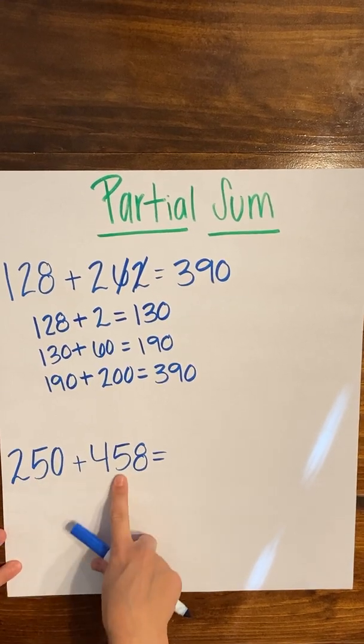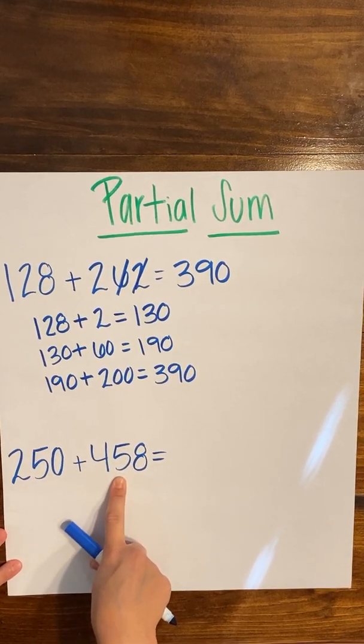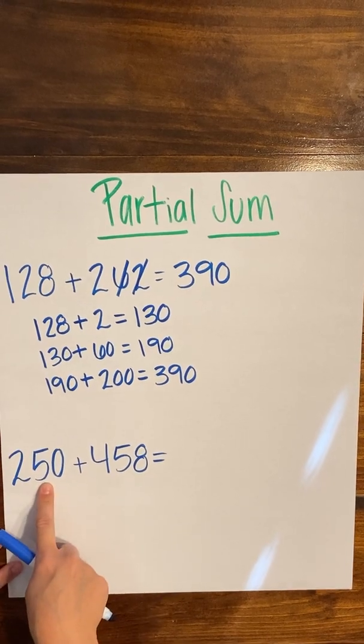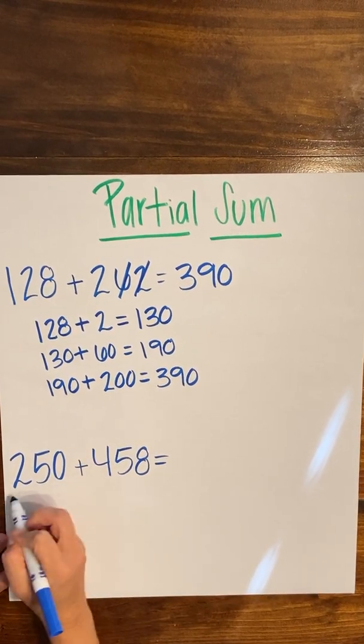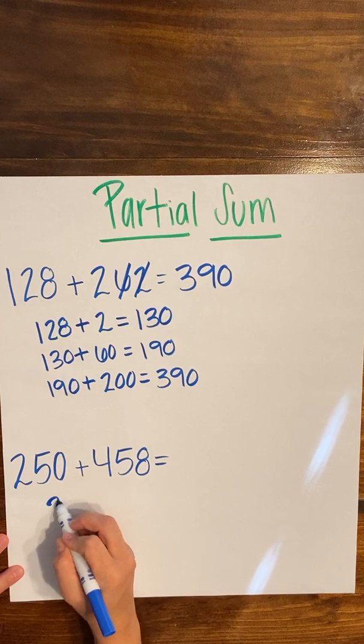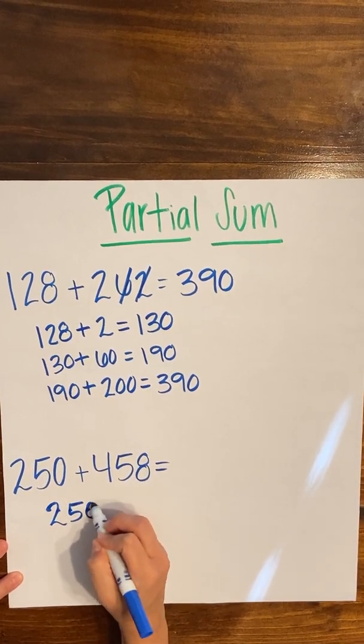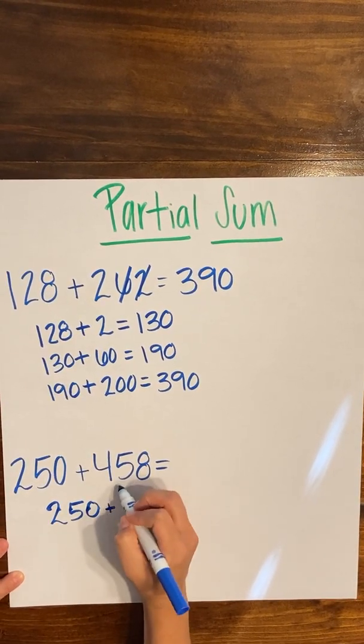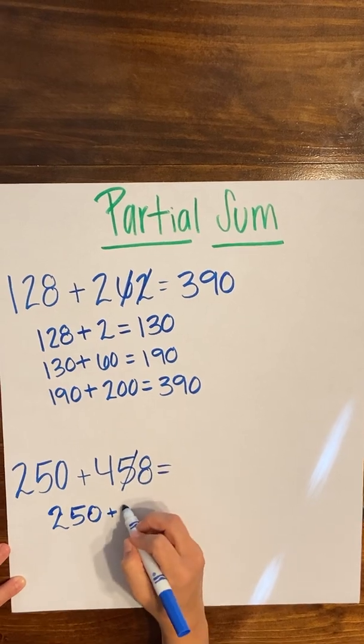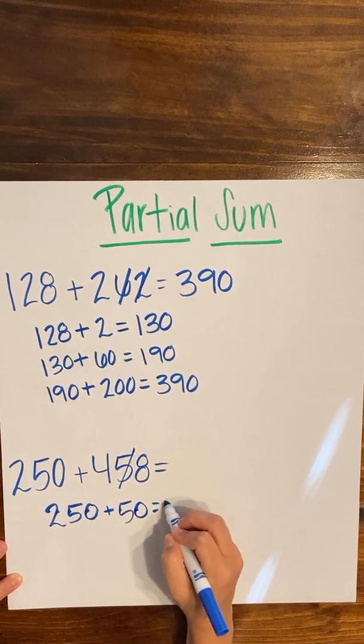that's going to get me up to the next 100. So what I'm going to take is I'm going to keep the first addend, 250 the same, and I'm going to go ahead and add the 50 from the tens place to give myself 300.